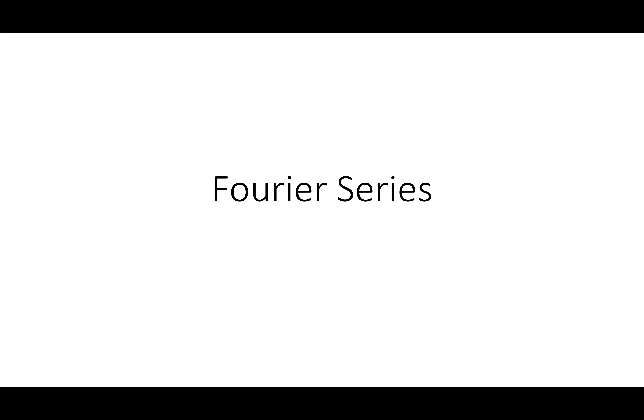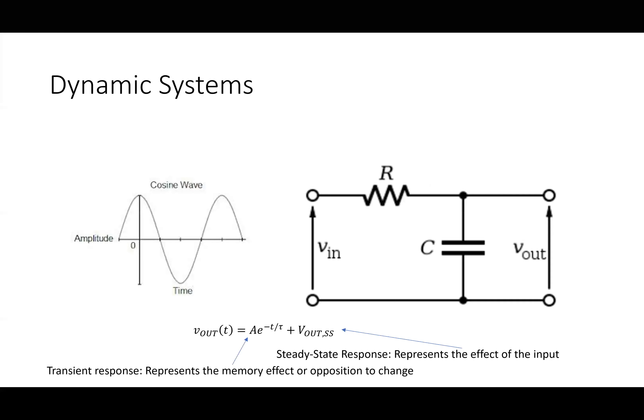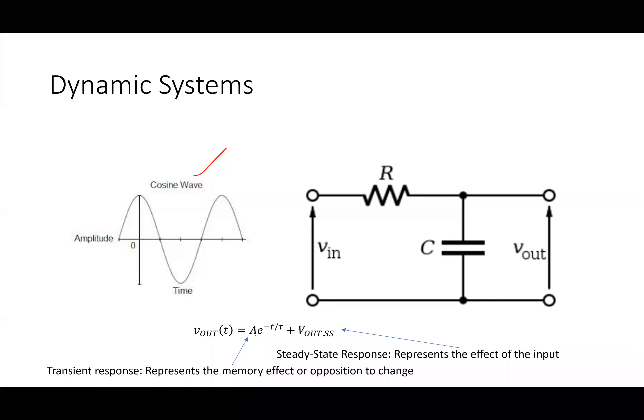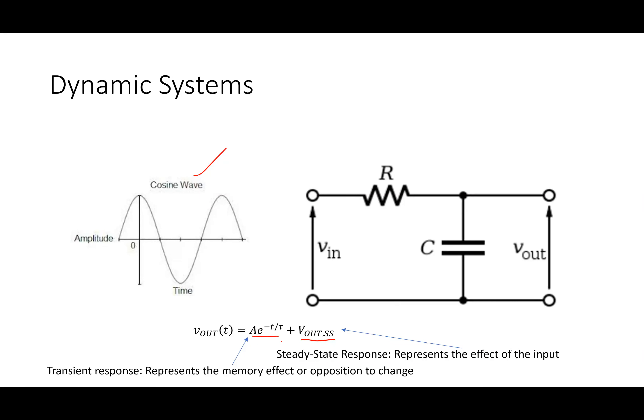Some of you have probably heard of Fourier series before, but I wanted to motivate it and understand it a little bit because it's a pretty common tool. In general, when talking about a circuit, I have some kind of dynamic system, and my input might be a cosine wave. If I wrote down the differential equation, you should know there are two parts of the response: a steady-state response and a decaying exponential transient.